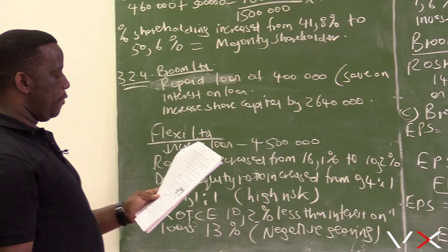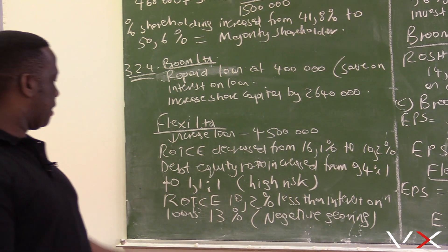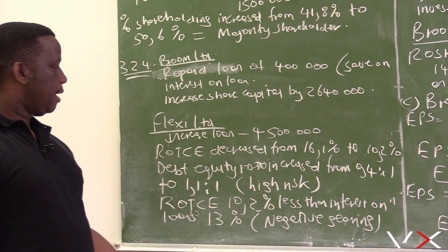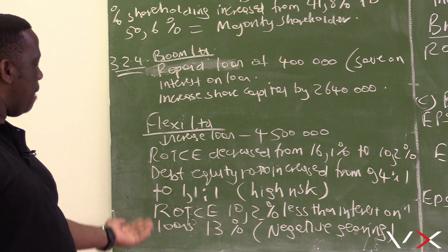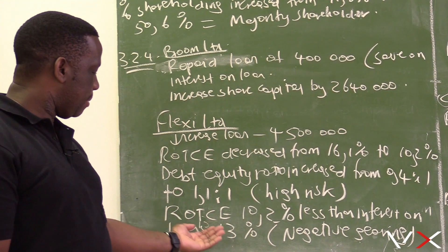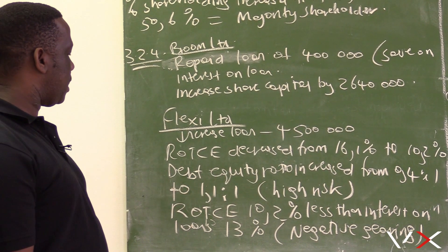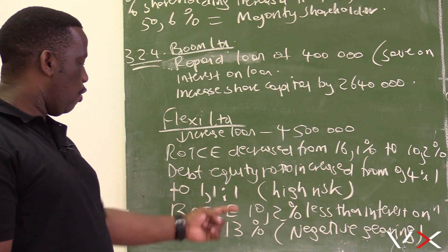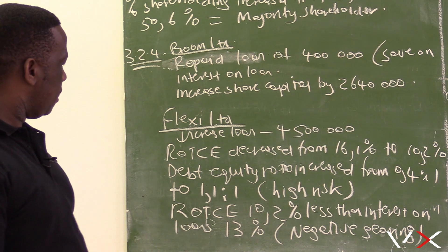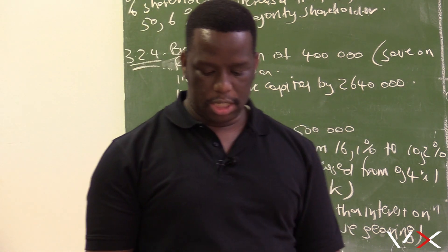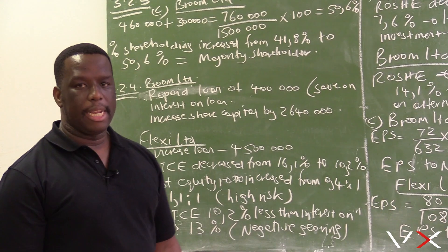Coming back to the question of Flexi Ltd — explaining how the decision affected risk and gearing: the risk is now too high as the debt equity ratio increased from 0.4:1 to 1.1:1. The ROTC is only 10.2 percent while interest on loan is 13 percent, so the company has negative gearing. The decision to increase the loan by this much was not a good decision given the high risk and negative gearing.